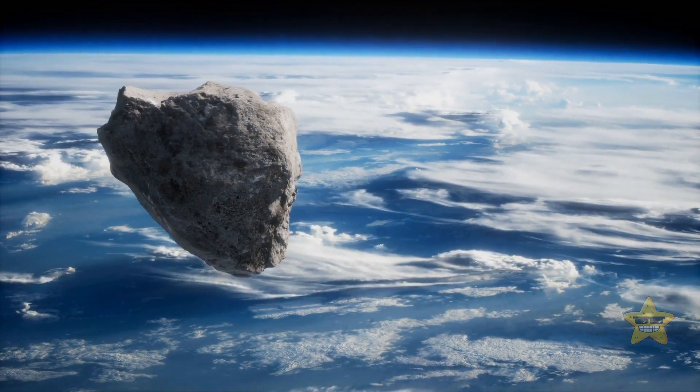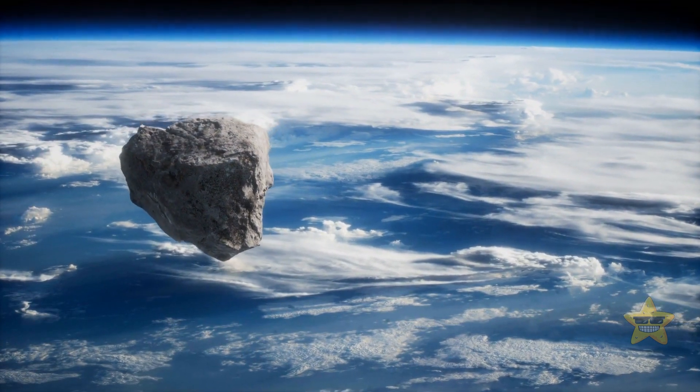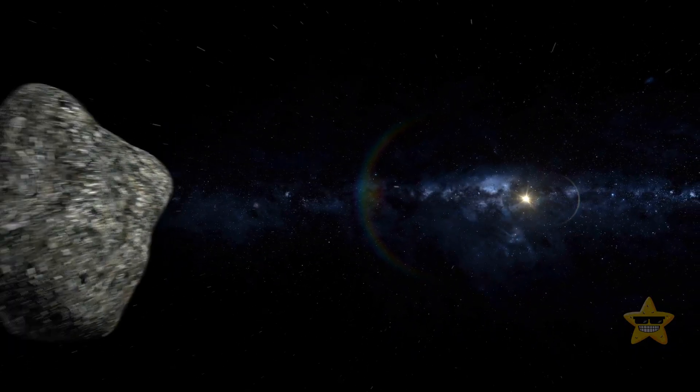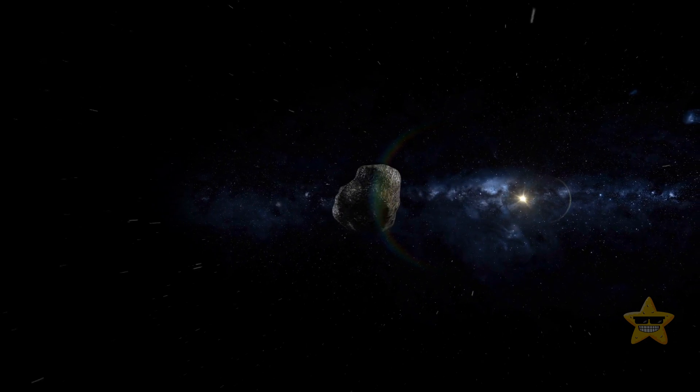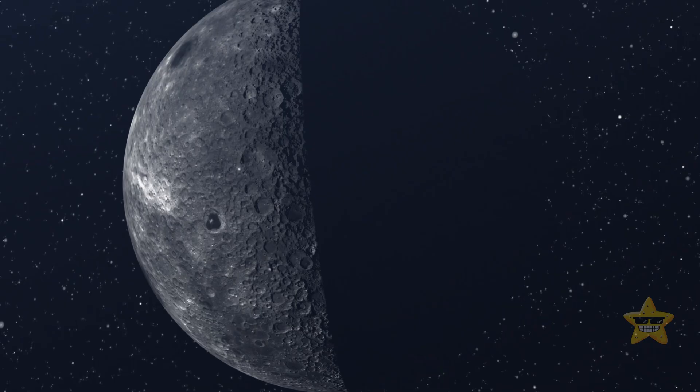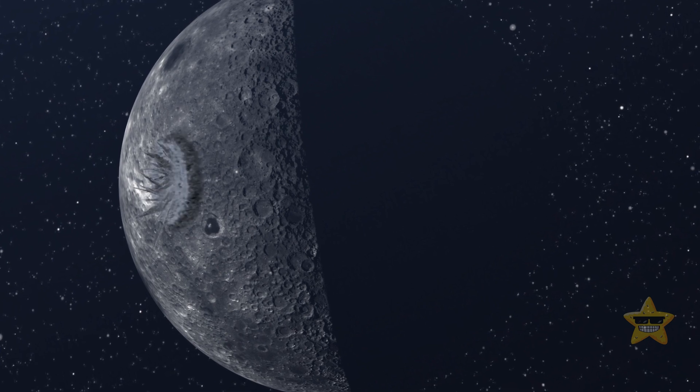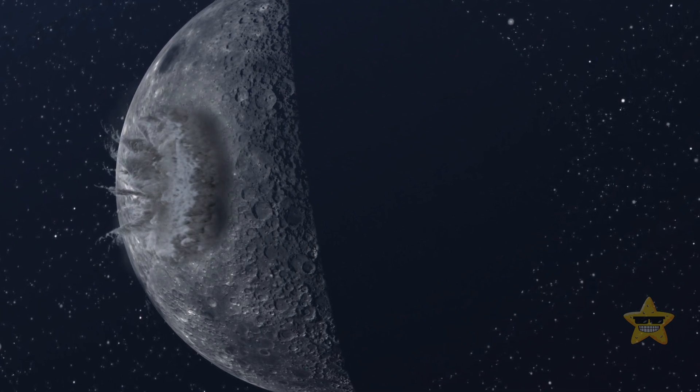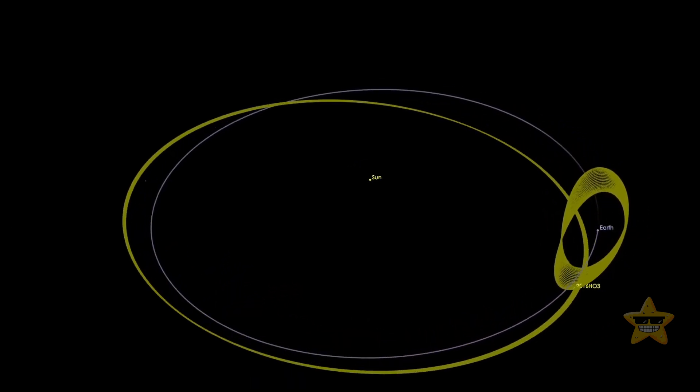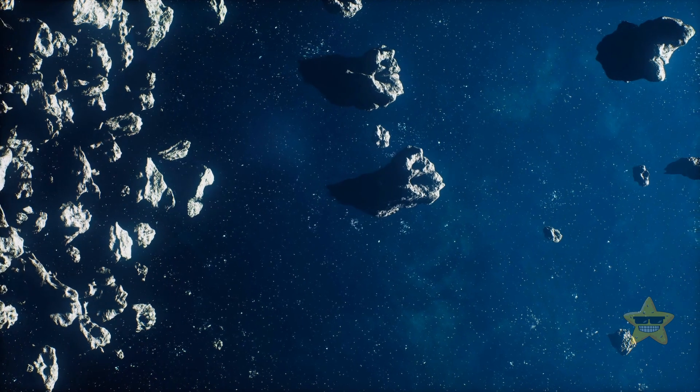We found more than 480 lunar meteorites on our planet. It may mean that pieces of our natural satellite travel through space pretty regularly, and Kamo'oalewa might as well just be the first discovered large rock split off the moon as a result of an ancient collision. Now we've already talked about quasi moons. Let's find out more about asteroids.